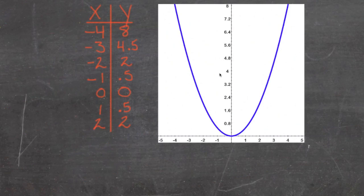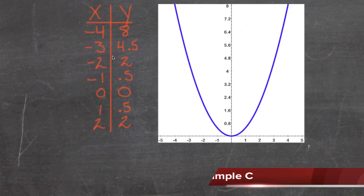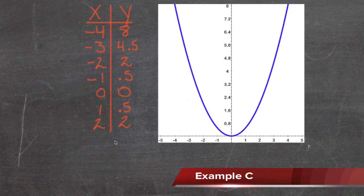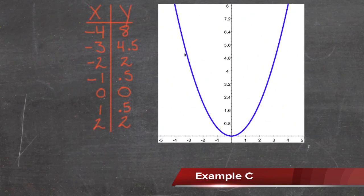Here we're taking information from a graph, converting it into a table, and then using that information to write a function. I went ahead and wrote a number of values from the graph into a table to save time. You can see if you look at any of the x-values here that there are associated y-values for them, and they're actually on the line.